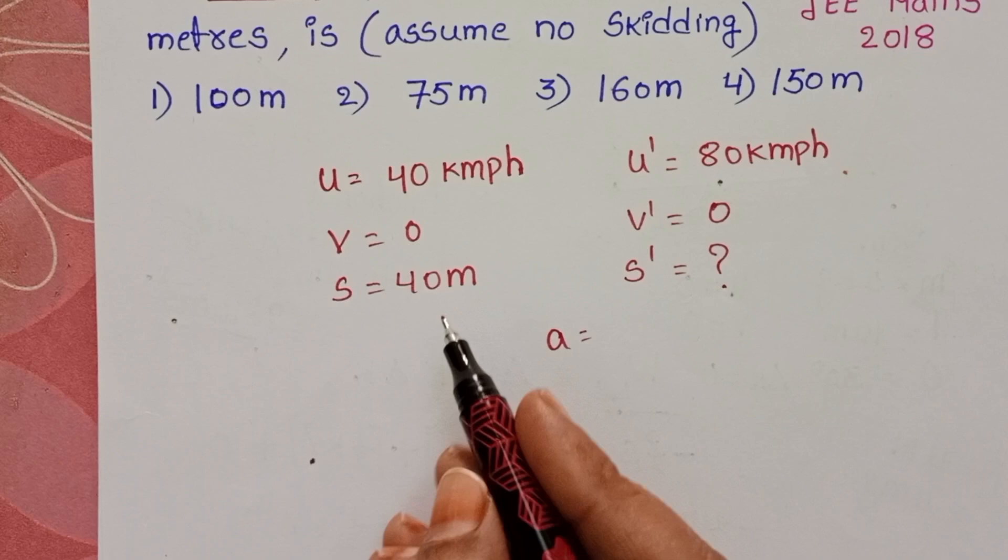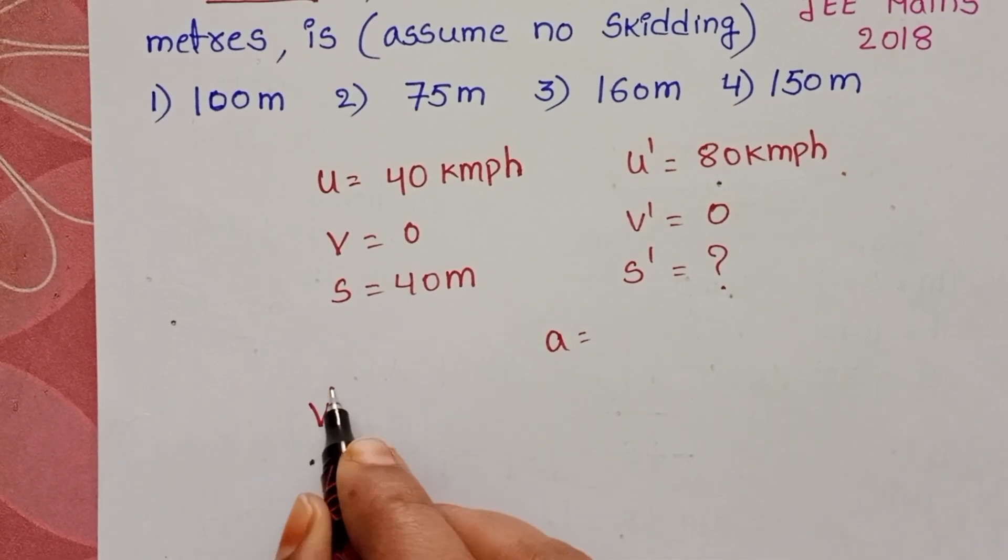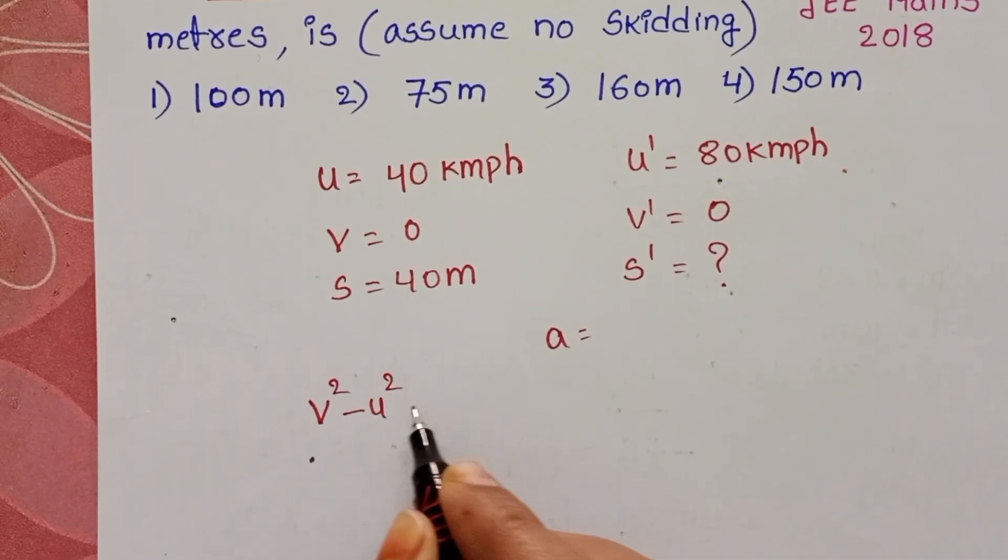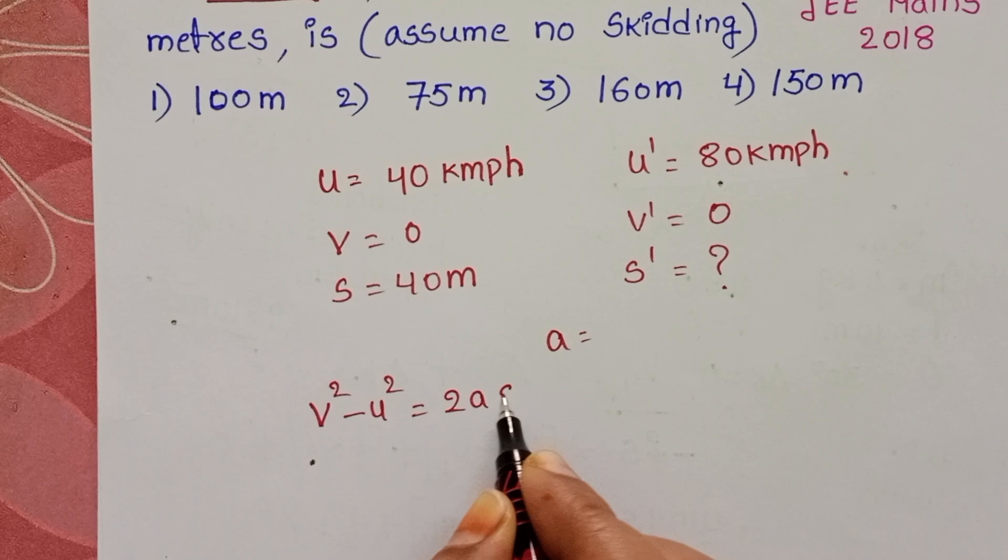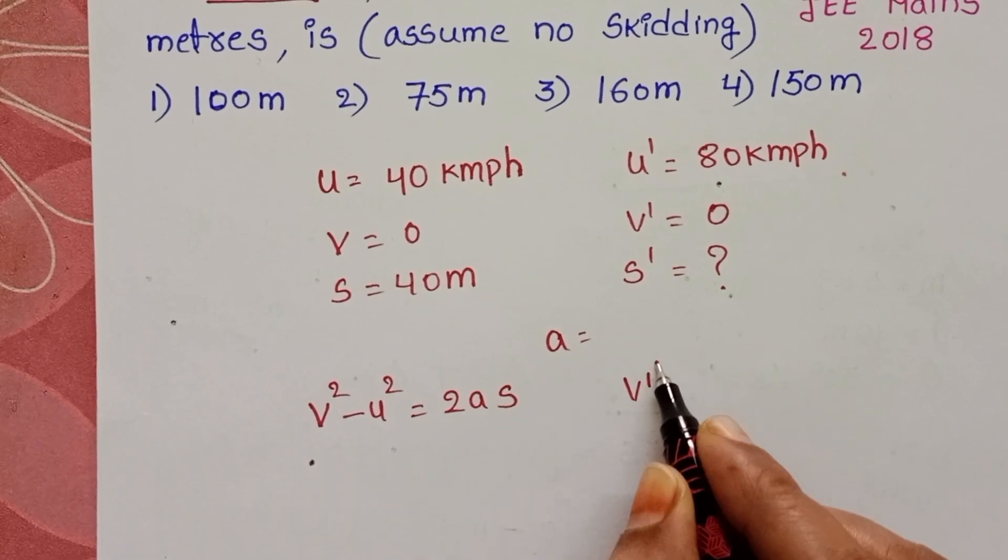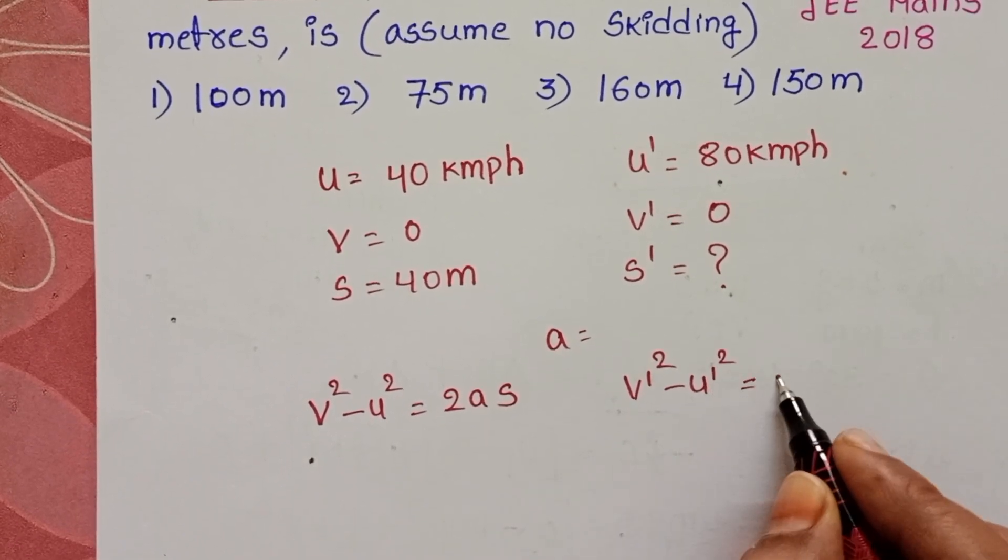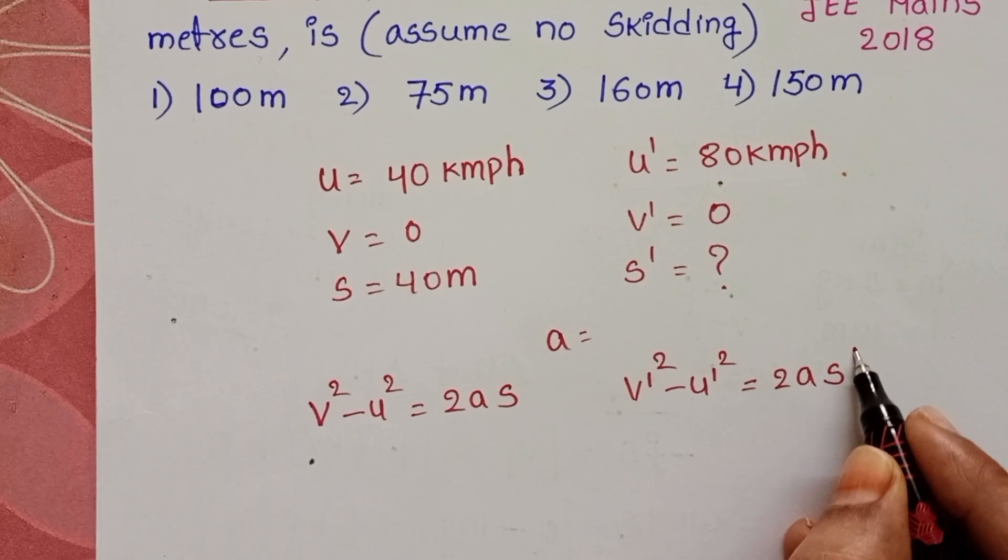Take the equations of motion. For the first case, v² - u² = 2as. For the second case, v'² - u'² = 2as'.